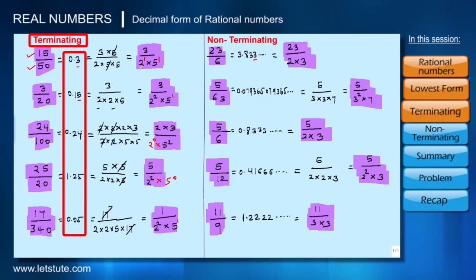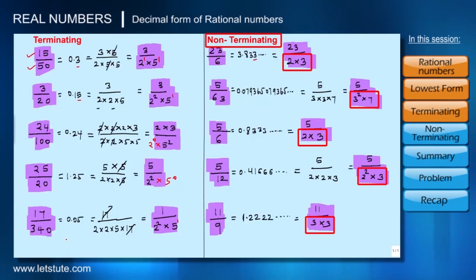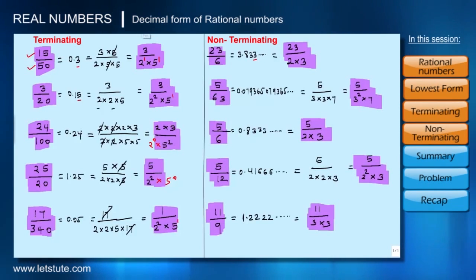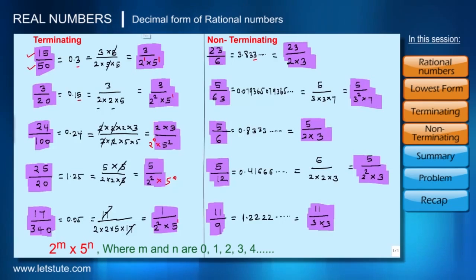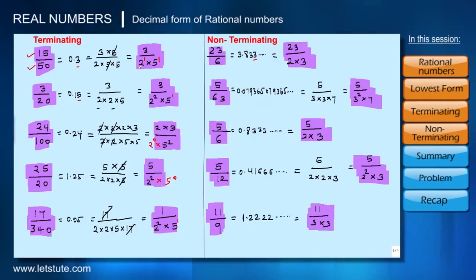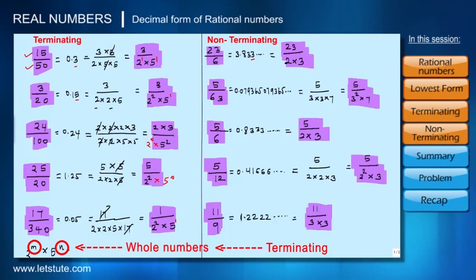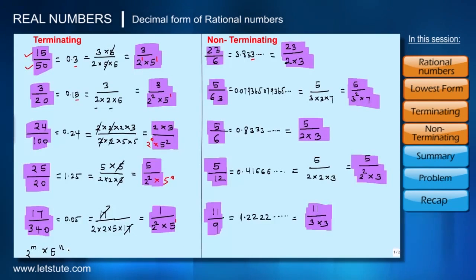If the denominator has only 2, powers of 5, powers of 2, or the product of 2 and 5 with some powers, that fraction has a terminating decimal form. If it is not of this form, the fraction is non-terminating. The general form is 2^m × 5^n, where m and n are whole numbers (0, 1, 2, 3, ...) and must not be negative. Without dividing, we can determine if a number is terminating or non-terminating.